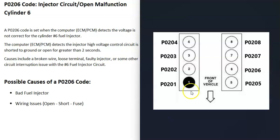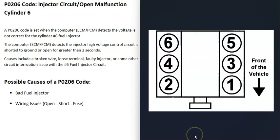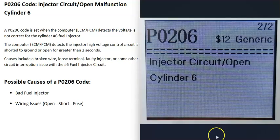The first thing to do when you get this code is to locate cylinder number six on your particular engine, since there are differences between engines. You can Google your engine along with 'cylinder location' or 'firing order' to find where cylinder six is — that's the one having the problem.